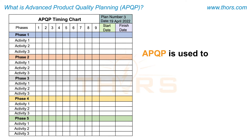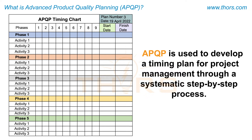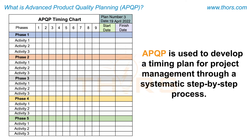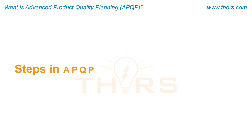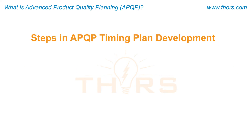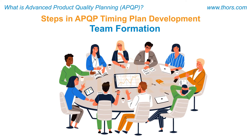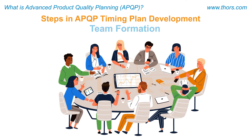APQP is used to develop a timing plan for project management through a systematic step-by-step process. The first step in APQP timing plan development is the formation of a multidisciplinary team.